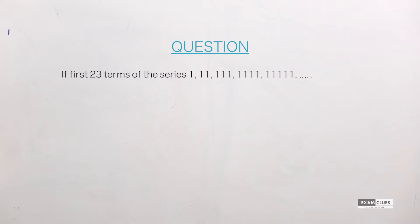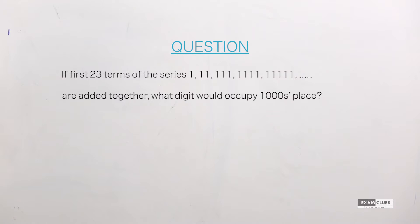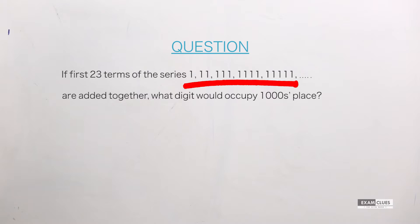The question: if the first 23 terms of the series 1, 11, 111, 1111, 11111, and so on are added together, what digit would occupy the thousands place?